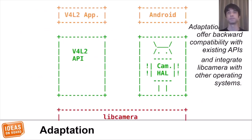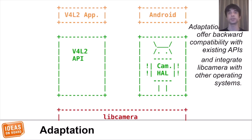Even though LibCamera offers a native API, we decided we need adaptation layers to be backward compatible with existing APIs to ease the transition. We have a V4L2 compatibility layer that allows most V4L2 applications to work with LibCamera without requiring recompilation. This works by intercepting library calls such as open, close, mmap, and IOCTL via LD_PRELOAD. It only supports features equivalent to a UVC camera, so it's still best to transition to LibCamera. We have managed to do video calls on Firefox with LibCamera via this compatibility layer.